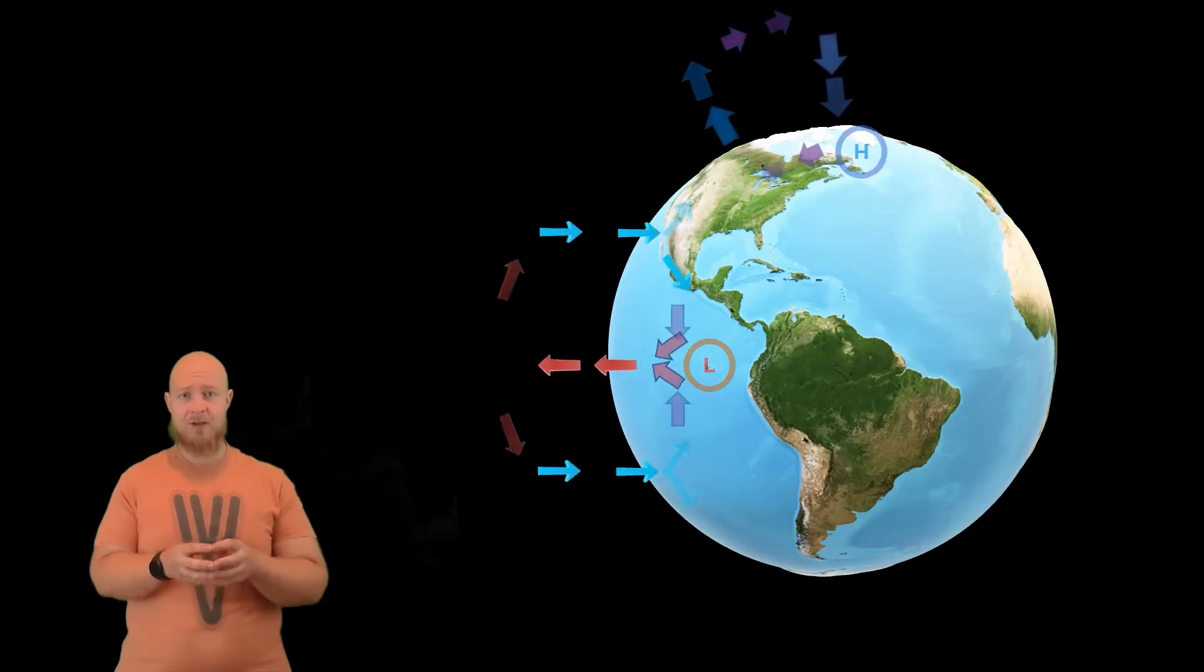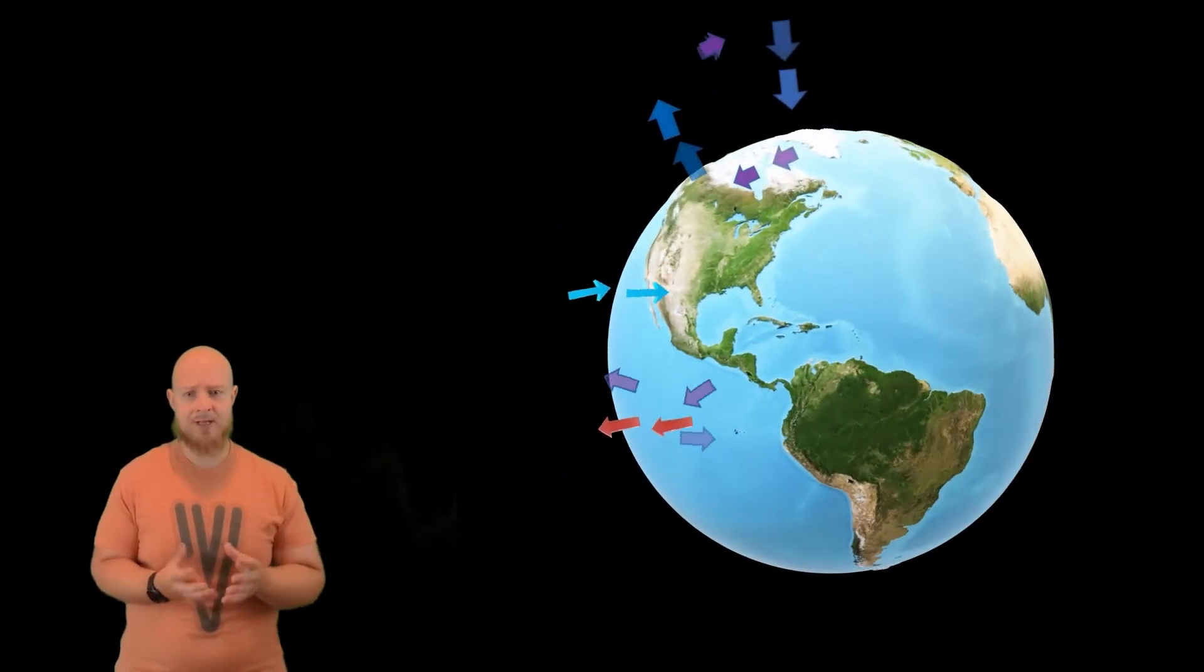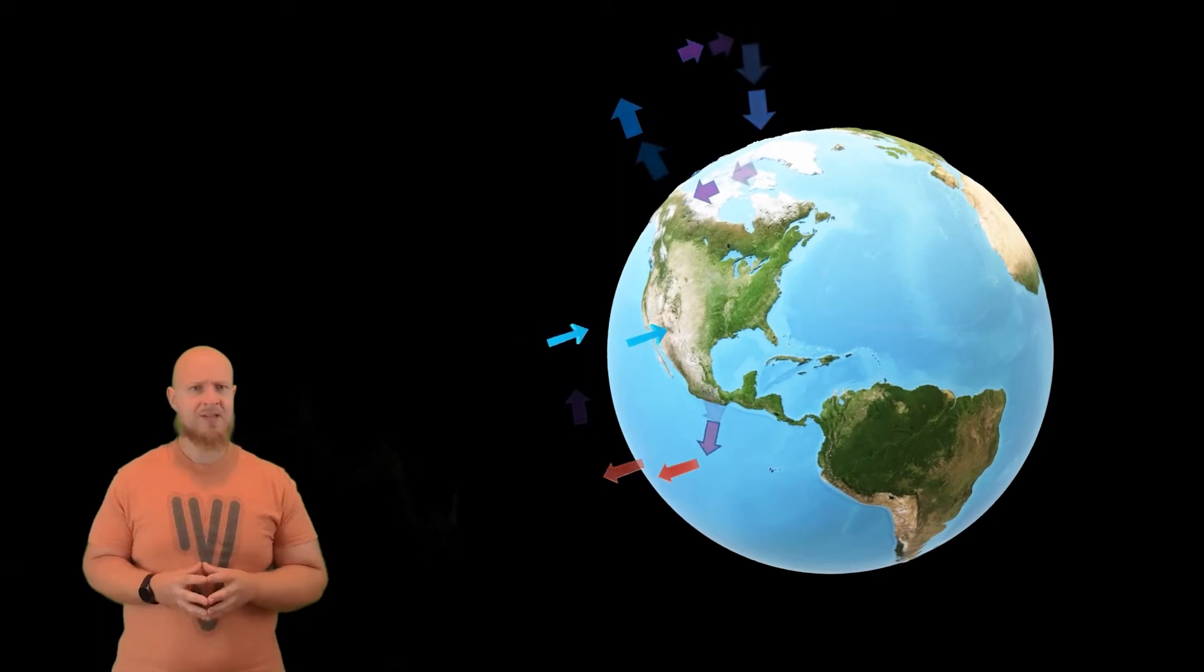Well, the cell that's left is the mid-latitude cell, or the ferrel cell in the middle, and this is a mechanical cell. The updrafts and downdrafts are caused by the kinetic energy of moving air caused by the other two cells.